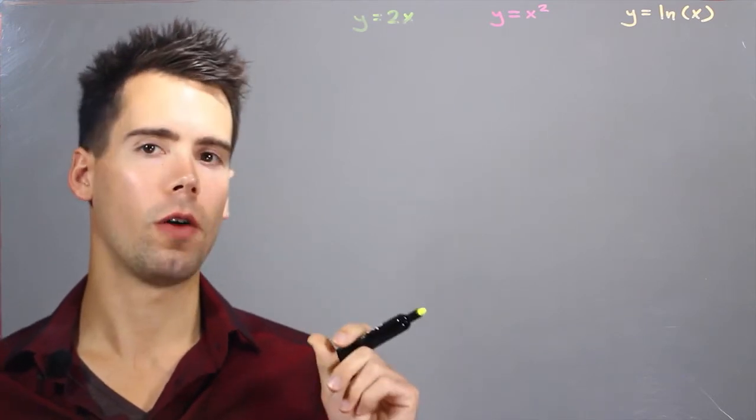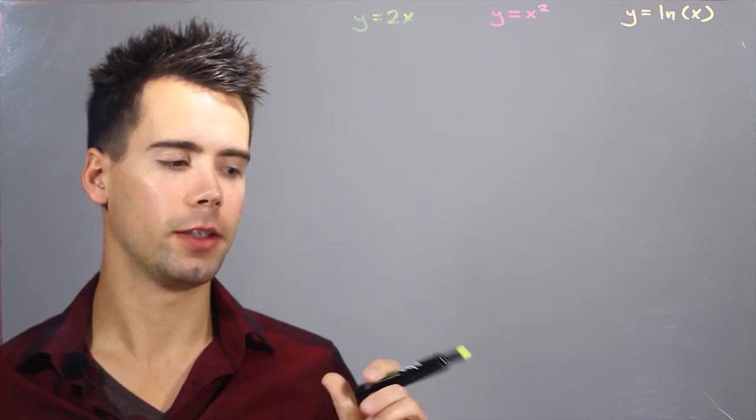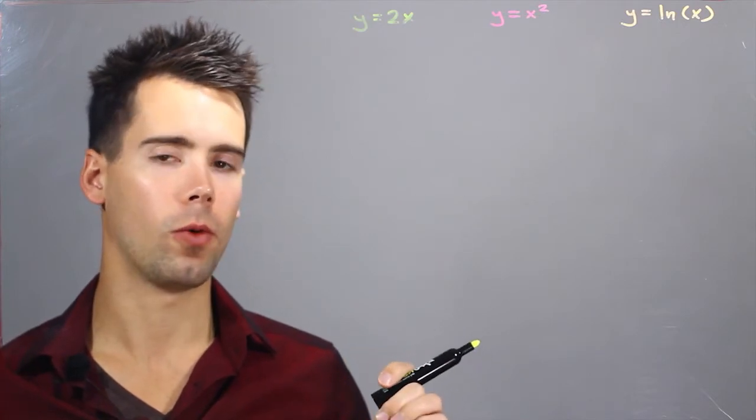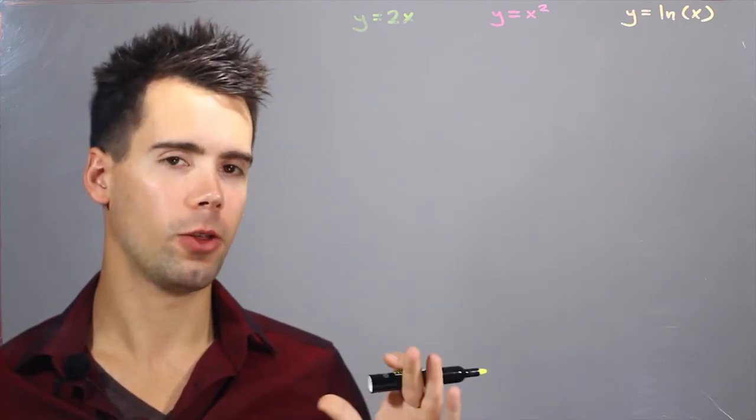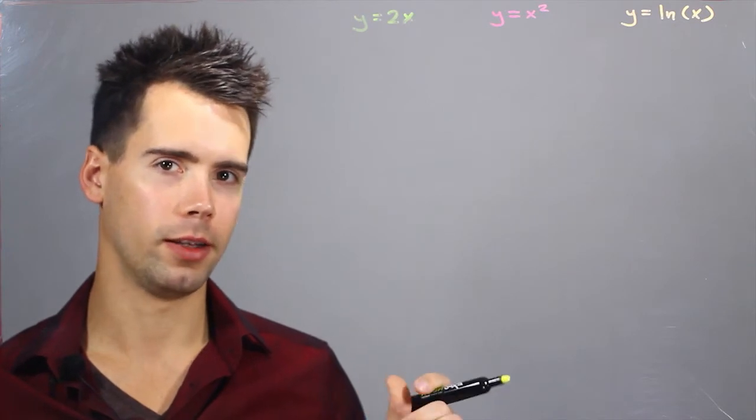So the first step is to write all of your x's as y's. The second step involves solving for y once you've done this. And the third step involves writing y as y inverse.